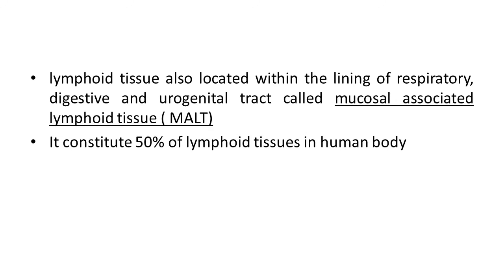In the human body, lymphoid tissues are also located within the lining of the respiratory tract, digestive tract, and urogenital tract. This is generally known as MALT — mucosal associated lymphoid tissue — because mucosa layer is present in the lining of these tracts. MALT constitutes 50% of lymphoid tissue in the human body.